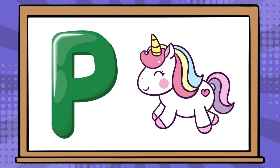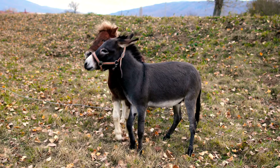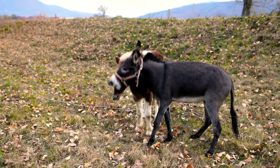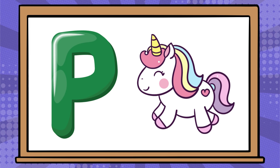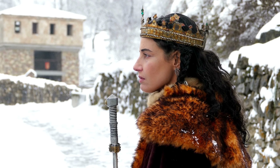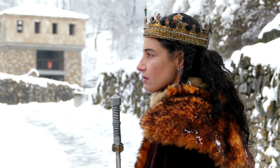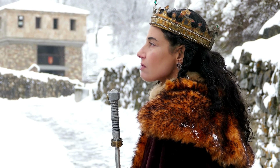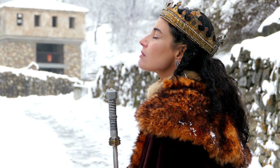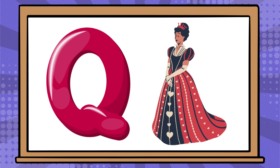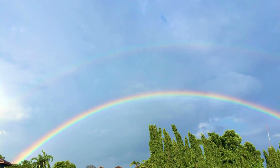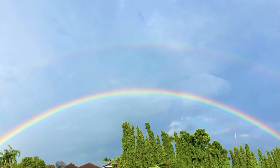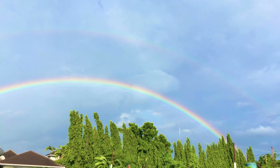P is for pony. P, P, pony. Q is for queen. Q, Q, queen. R is for rainbow. R, R, rainbow.